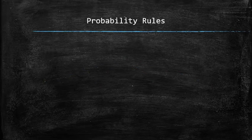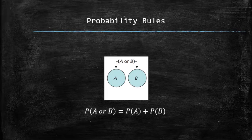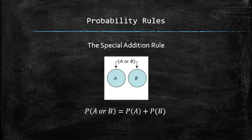Consider the union of two mutually exclusive events A and B as shown on the Venn diagram. Recall that the areas of the regions represent the probabilities of the corresponding events. So the area of the union of A and B equals the sum of the areas of A and B. In other words, P(A or B) = P(A) + P(B). This relation is called the special addition rule, and it only applies to mutually exclusive events.